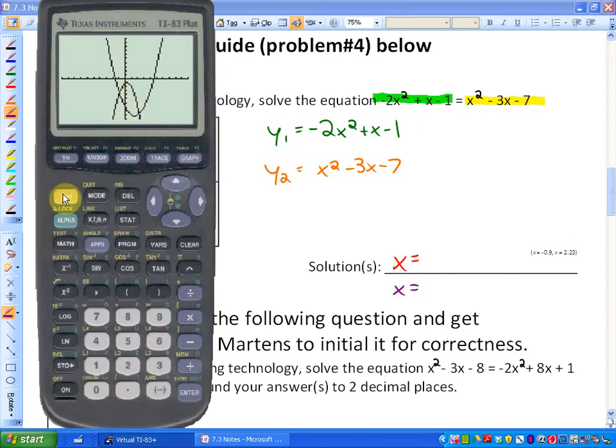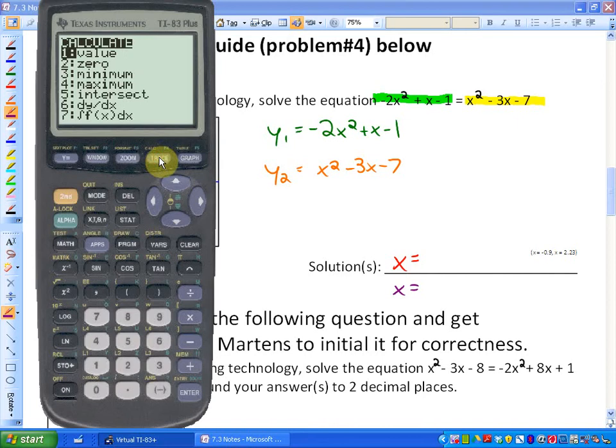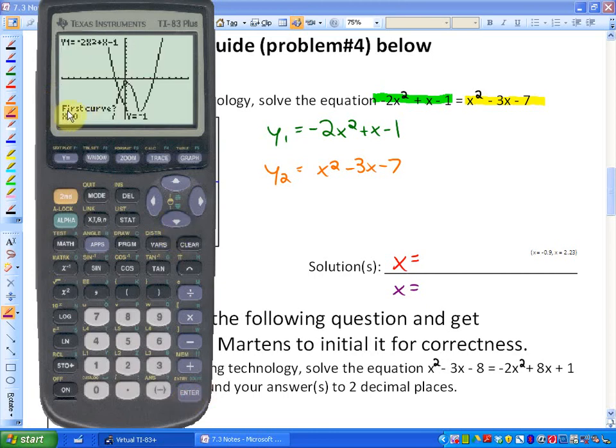If you press 2nd and then TRACE, you'll see here number five says intersect. So you actually want to determine where they intersect. So if I go down to number five or press the number five, it's going to ask me three questions.